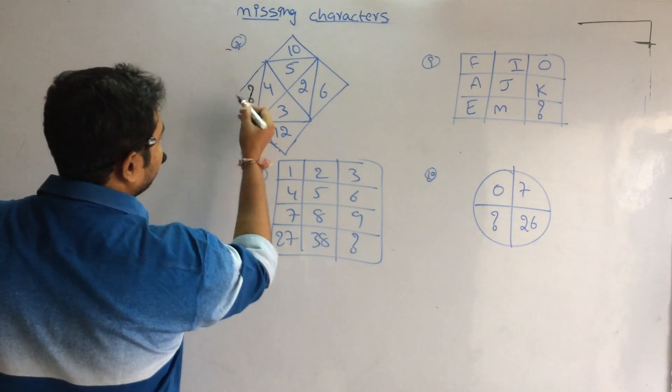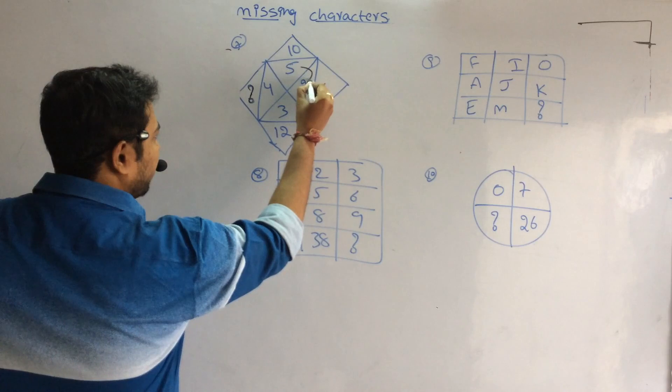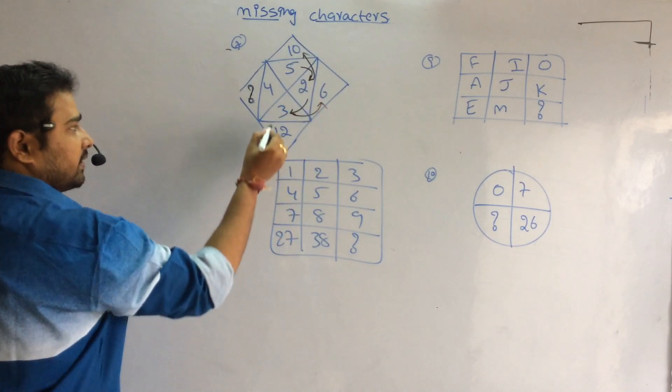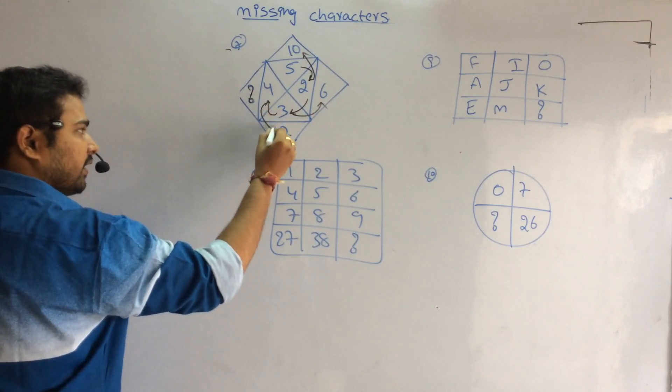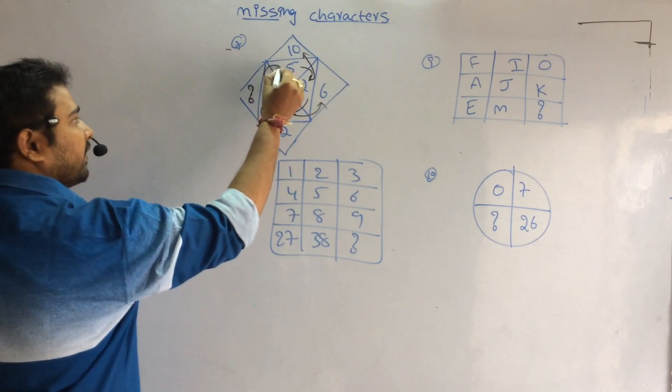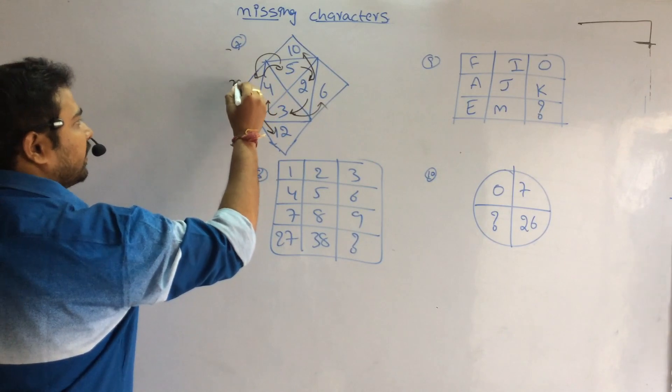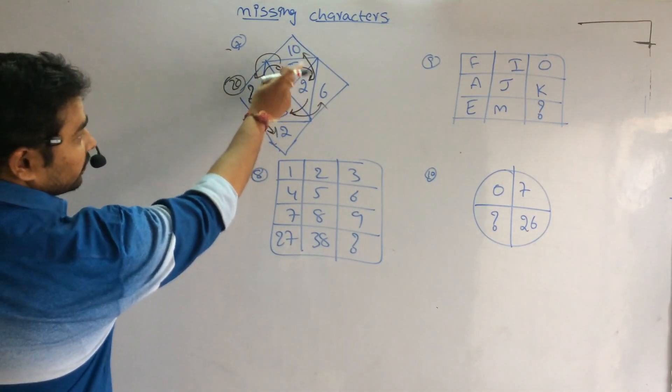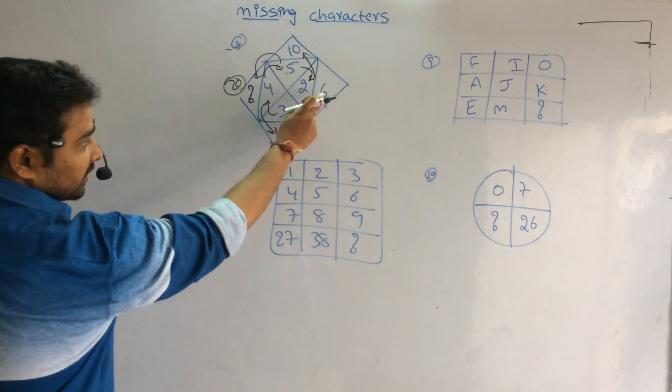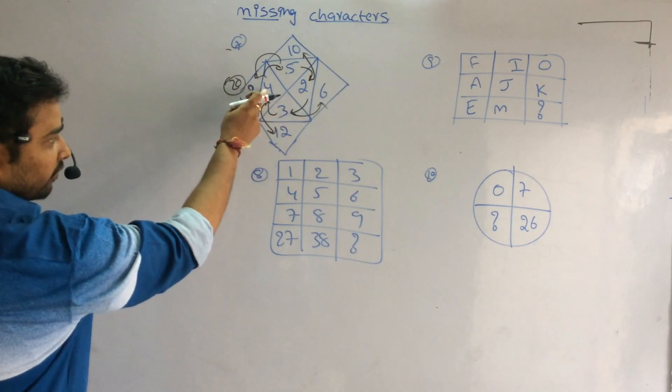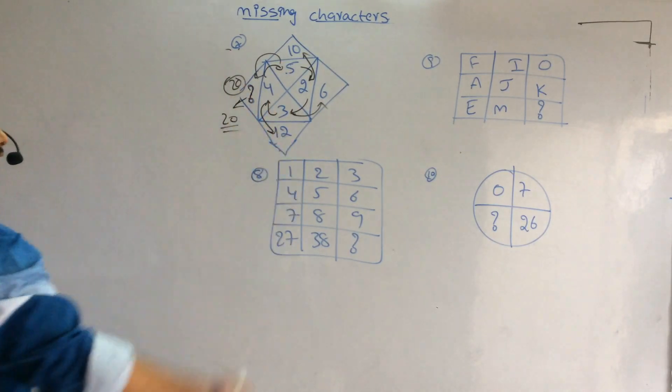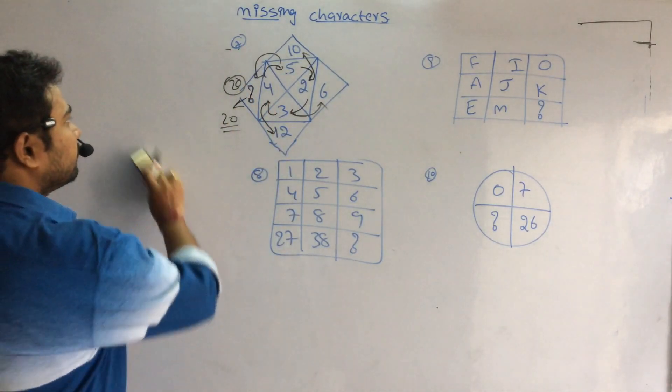How did this come here? 5×2 is 10, 2×3 is 6, 3×4 is 12. Likewise, 4×5 is 20. 5×2 is 10, 2×3 is 6, 3×4 is 12, 4×5 is 20. What is the value here? 20 is my answer.